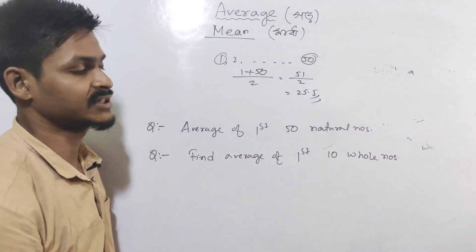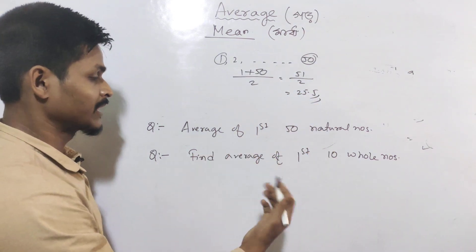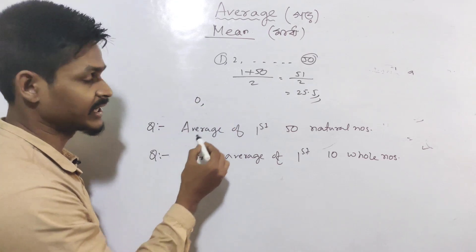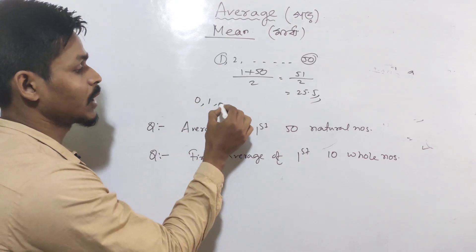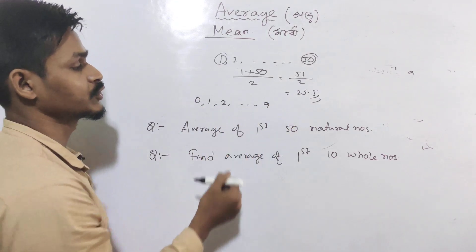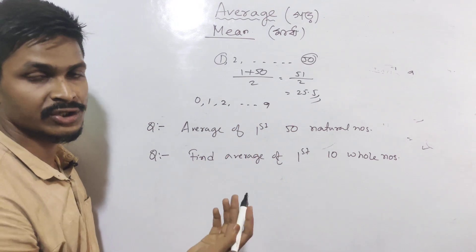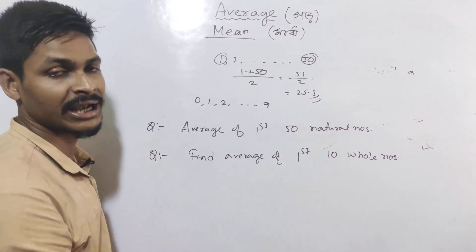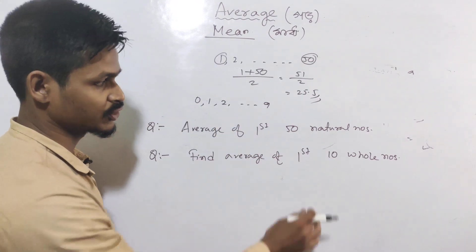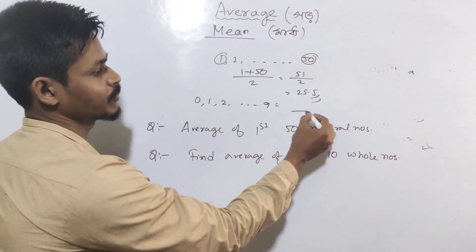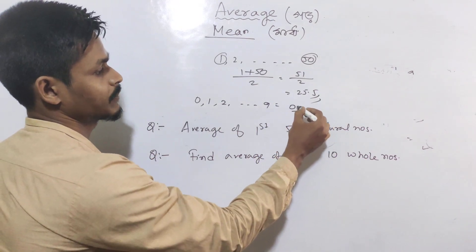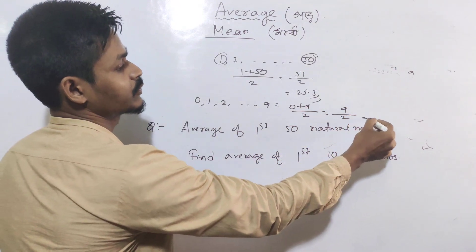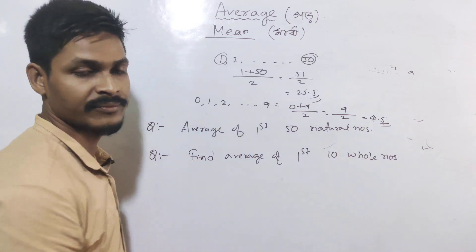Find the average of the first 10 whole numbers. Whole numbers start from 0: 0, 1, 2, 3... up to 9. Using first number plus last number divided by 2: 0 plus 9 divided by 2 equals 9 divided by 2, which is 4.5.